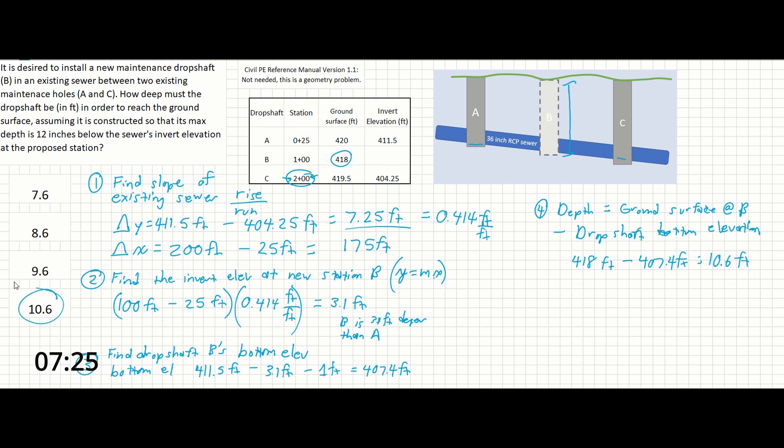And that's all it takes to solve this particular problem. The only thing you'd really need to know here is that an invert elevation means the bottom of the sewer. There's nothing else from the manual since the rest of this is just a geometry problem. And that's it.